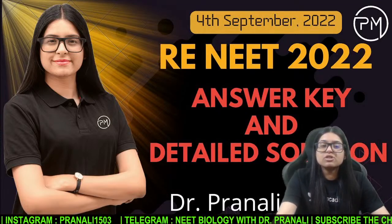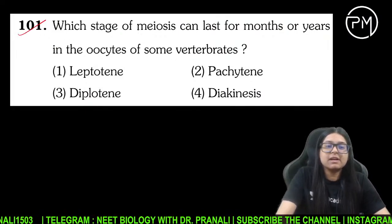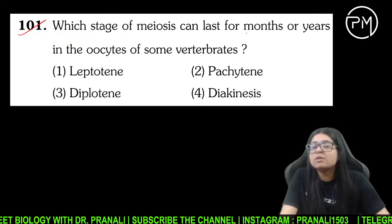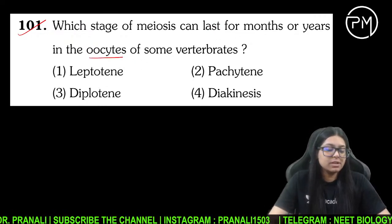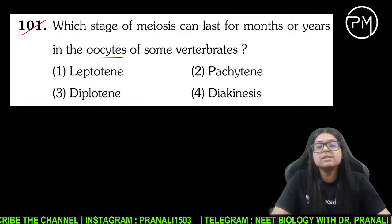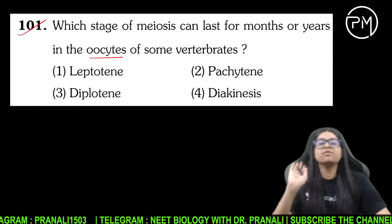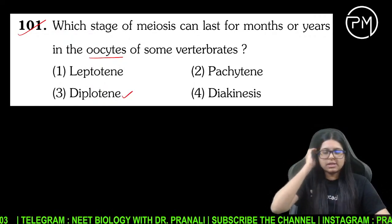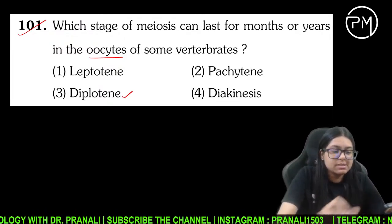Chalo NEET ka paper start karte hain discuss karna. Which stage of meiosis can last for months or years in the oocytes of vertebrate? Vertebrate ke andar konsi woh stage hai jismein oocytes atak jaata hai for months to years — that is diplotene. Meiosis 1, Prophase 1 ka diplotene stage hai. Ye bilkul NCERT se aaya hua question hai.